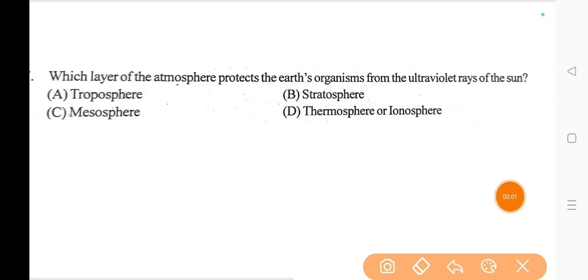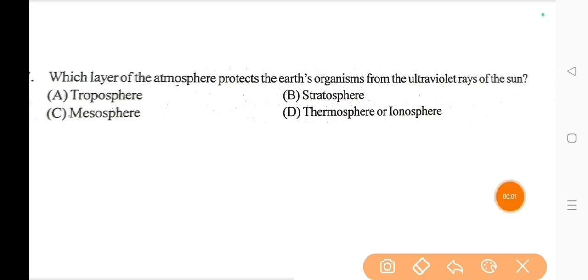Next question, which layer of the atmosphere protects the earth's organisms from the ultraviolet rays of the sun? Option B, stratosphere. And in the stratosphere, the ozone layer is situated.